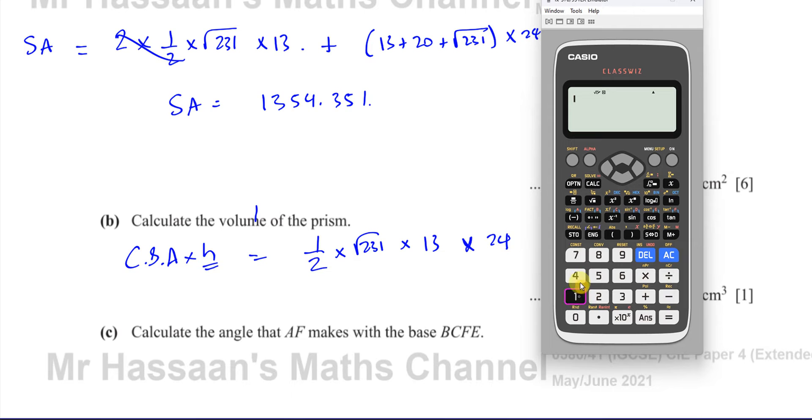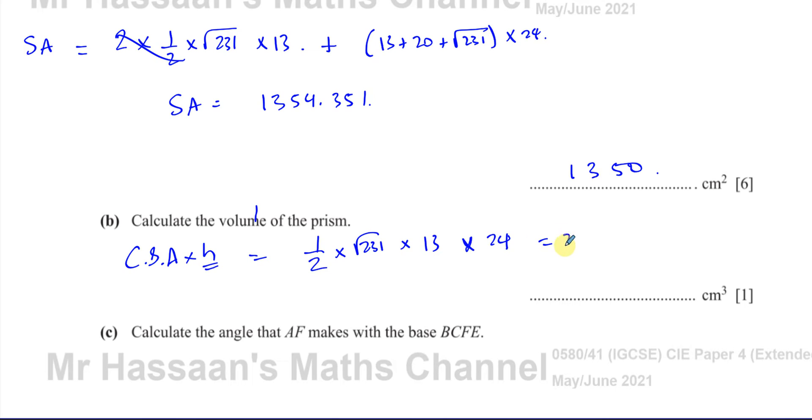So we have a half times root 231, multiplied by 13, multiplied by 24. Don't forget to press the space after this one, so that it doesn't include the rest in the square root, takes it out of the square root. That gives you your answer, which is 2370.994. So to 3 significant figures, this is 2370 centimeters cubed. So that's the volume of the prism.